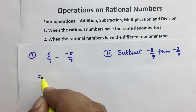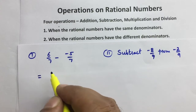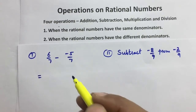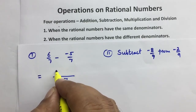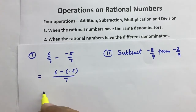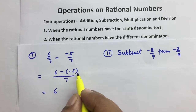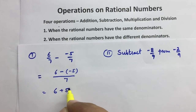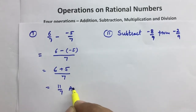Ab sabse pehla kaam hain — hame check karna hain ki kya ye dono rational numbers standard form mein hain. Yes, both are in standard form. Aur dono ka denominator bhi same hain, isliye LCM liya seven. Ye six minus minus five: negative of negative is positive, toh ye positive ho gaya five. Six plus five — dono positive numbers hain, isliye add ho jayenge — toh eleven upon seven. Ye hamare paas answer hain.